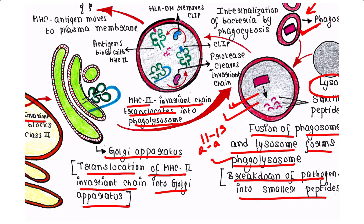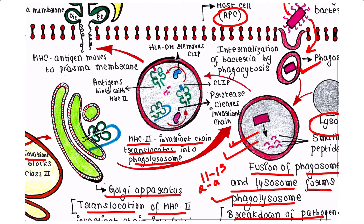Inside the phagolysosome, the invariant chain is broken down by proteases. The invariant chain is broken down into a small fragment called CLIP by proteases inside the phagolysosome.